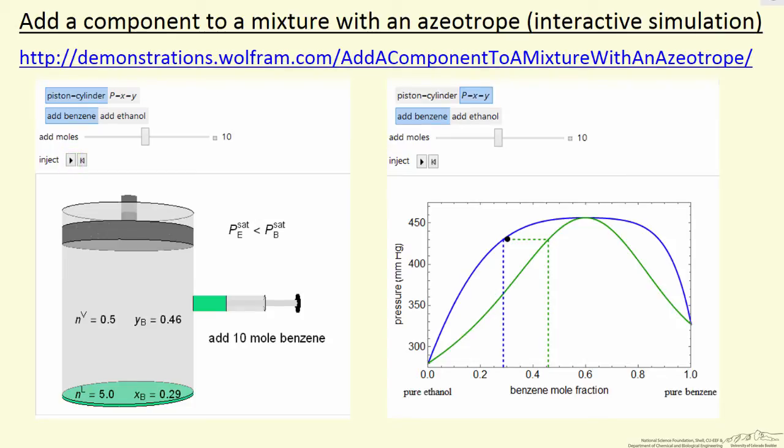We can instead add ethanol to the equilibrium mixture, and in addition to looking at this piston and cylinder we can look at the PXY diagram, which I show over here. So the idea is if we start at a certain condition...